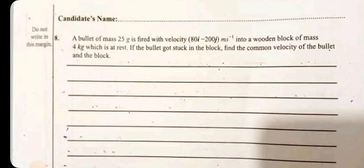A bullet of mass 25g is fired with velocity 80i minus 200j m per second into a wooden block of mass 4kg which is at rest. If the bullet got stuck in the block, find the common velocity of the bullet and the block.